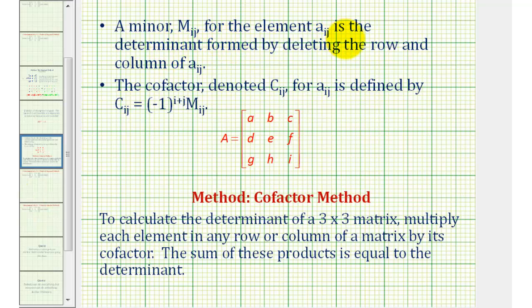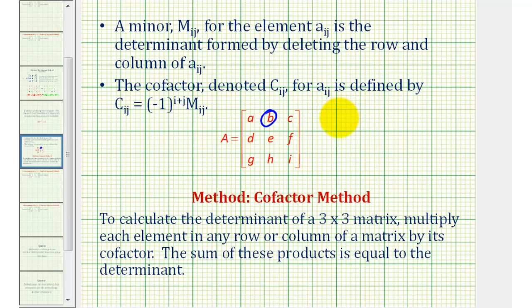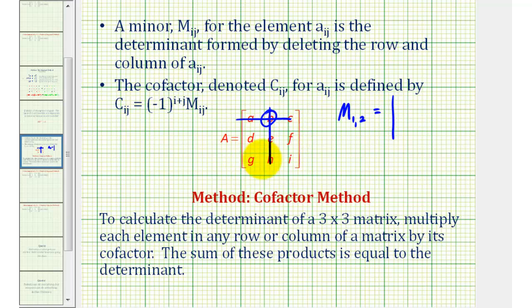First, the minor of any element is a determinant formed by deleting the row and column of that specific element. So for example, if we consider the element in row one, column two, its minor — m sub one comma two — is equal to the determinant formed by deleting row one and column two, leaving the four elements d, f, g, i as a two-by-two determinant.